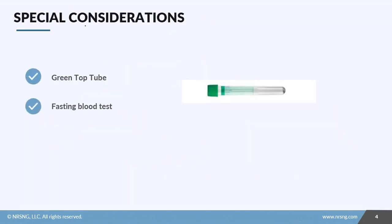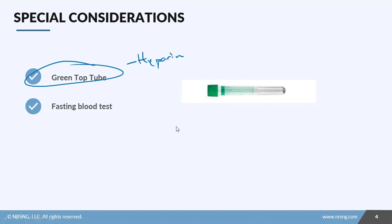There are a few special considerations when submitting this lab test. First, it goes in a green top tube — that's the one with heparin in it — which keeps the sample from clotting. It's typically an in-house test, meaning your facility is able to process it within its own lab without needing to send it out.